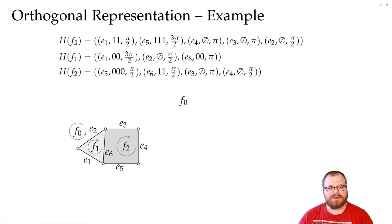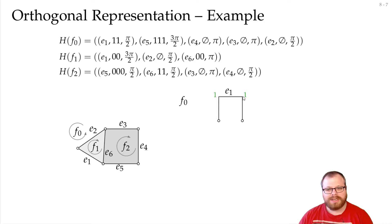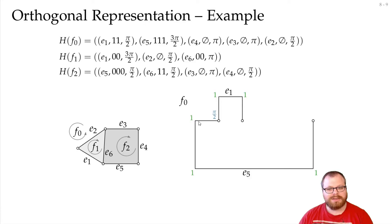We start with the outer face. The first edge is E1, whose shape has two left bends. Since we go counterclockwise, we walk along E1 with a left bend then another left bend. Then we have an angle of pi/2 to the next edge E5. That gives us a pi/2 turn, and E5 has three left bends — we make three left turns and end up at the next vertex.